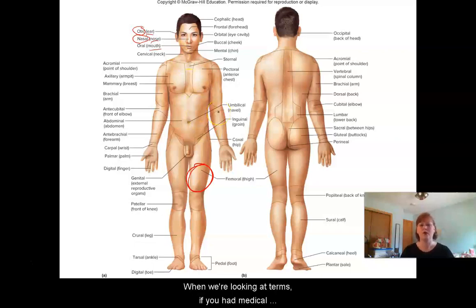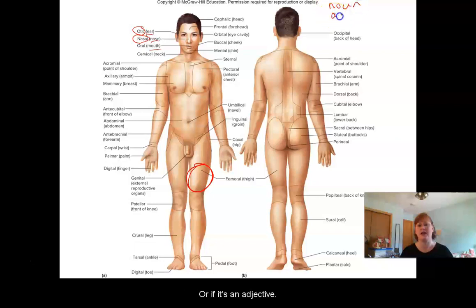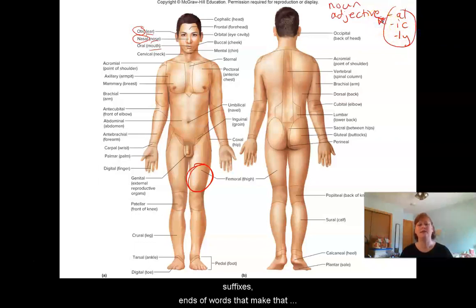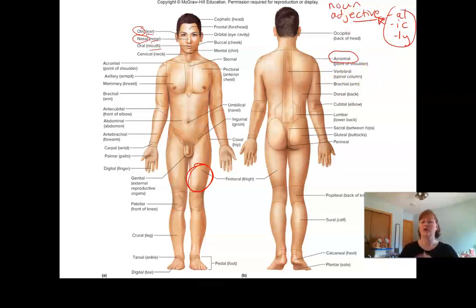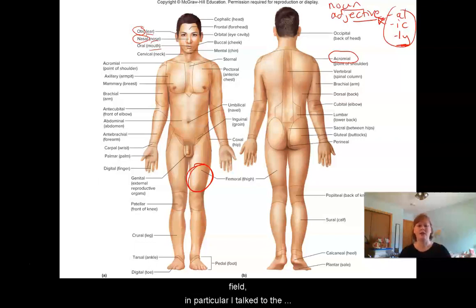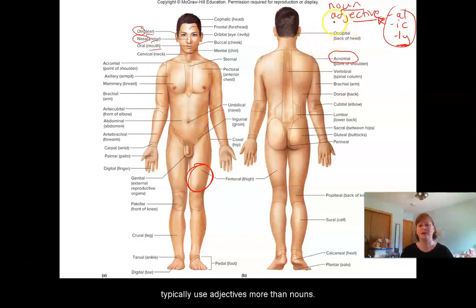When we're looking at terms, if you've had medical terminology, you know that sometimes there's a difference between how we say a word if it's a noun or if it's an adjective. In general, if it ends in -al, -ic, or -ly, those are good examples of adjective suffixes. So for example, acromial region is the point of your shoulder, or we can call it the acromion. If it doesn't end in one of these it's often a noun. From the people I've talked to in the medical field — including the head of our physical therapy assistant program — they typically use adjectives more than nouns.